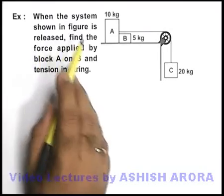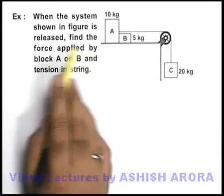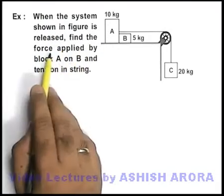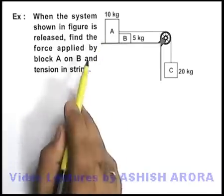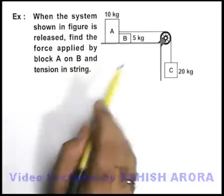In this example, we are given that the system shown in figure is released, and we are required to find the applied force by block A on B. And we are required to also find the tension in the string.